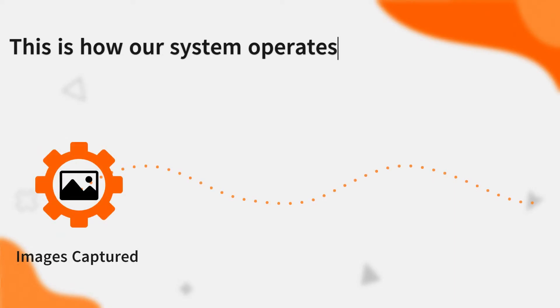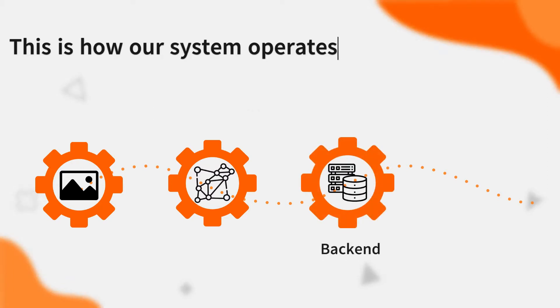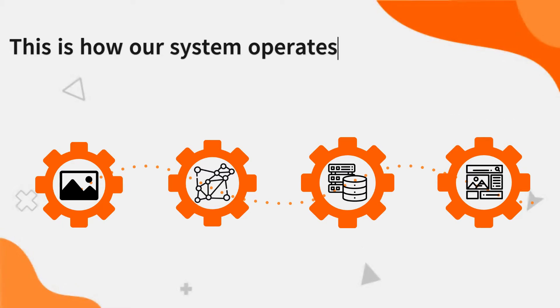Images captured by the front and rear cameras of the surveying vehicle are processed by our neural networks, which are trained to detect and parse the defects with deep learning techniques. The types and locations of defects identified will then be stored in the back-end database, and hereby to update the front-end dashboard.